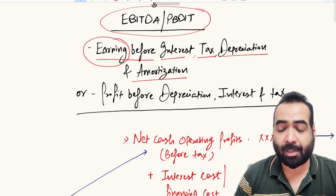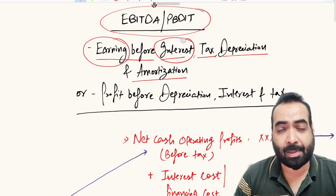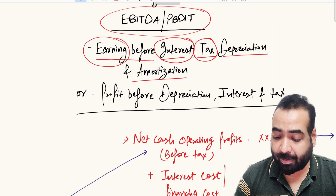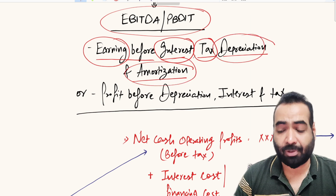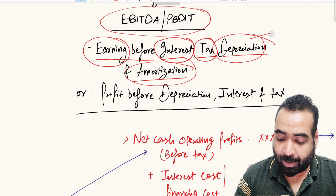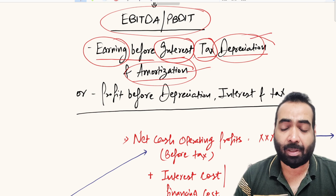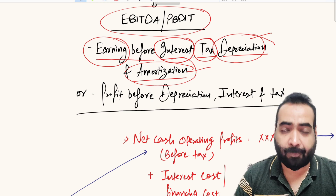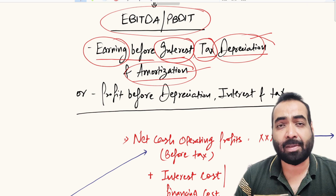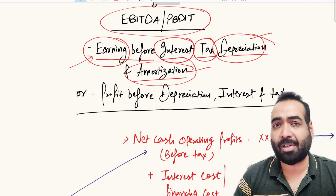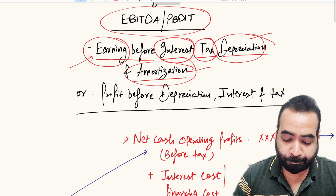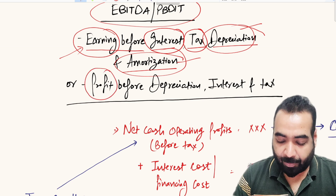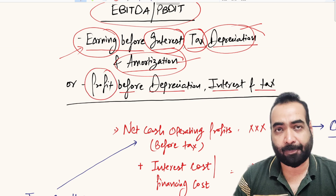From this earning, you haven't yet deducted the interest expense, the tax expense, and the depreciation and amortization. When we say depreciation and amortization, we mean the non-cash expenses are not deducted from these earnings — which means these earnings represent the cash earnings of the business. It is also called PBDIT: Profit Before Depreciation, Interest, and Tax.